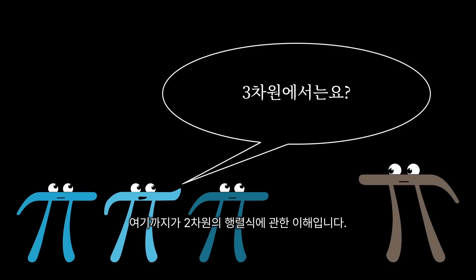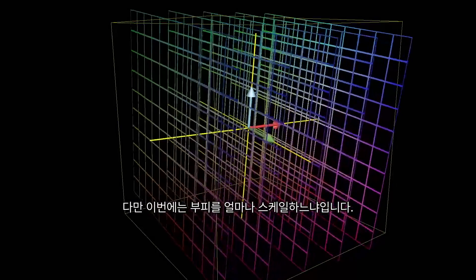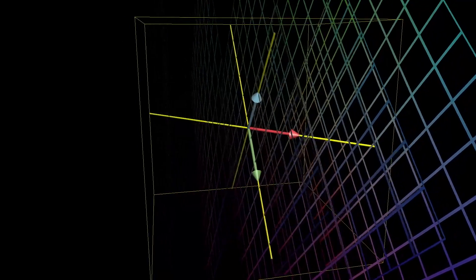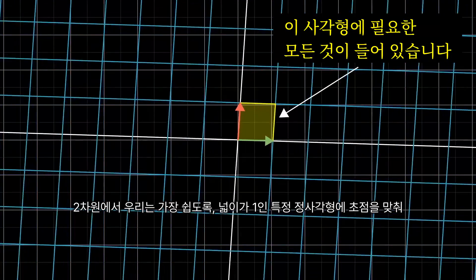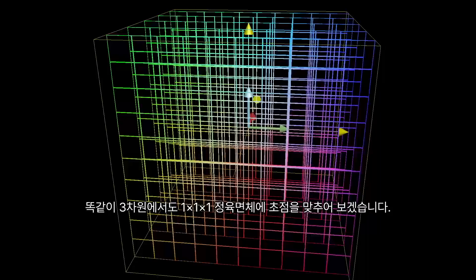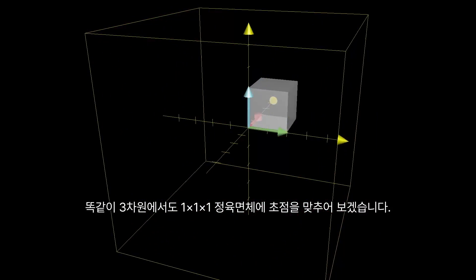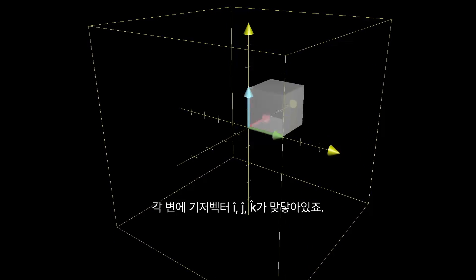So that's the understanding of determinants in two dimensions. What do you think it should mean for three dimensions? It also tells you how much a transformation scales things, but this time, it tells you how much volumes get scaled. Just as in two dimensions, where this is easiest to think about by focusing on one particular square with an area 1 and watching only what happens to it, in three dimensions, it helps to focus your attention on the specific 1x1x1 cube whose edges are resting on the basis vectors i-hat, j-hat, and k-hat.